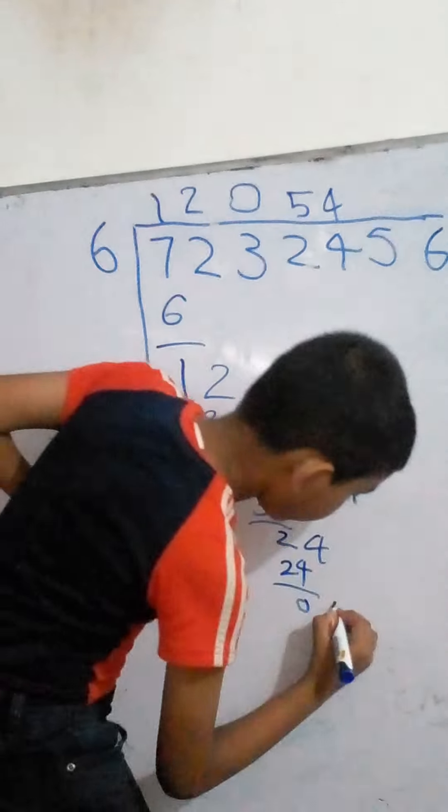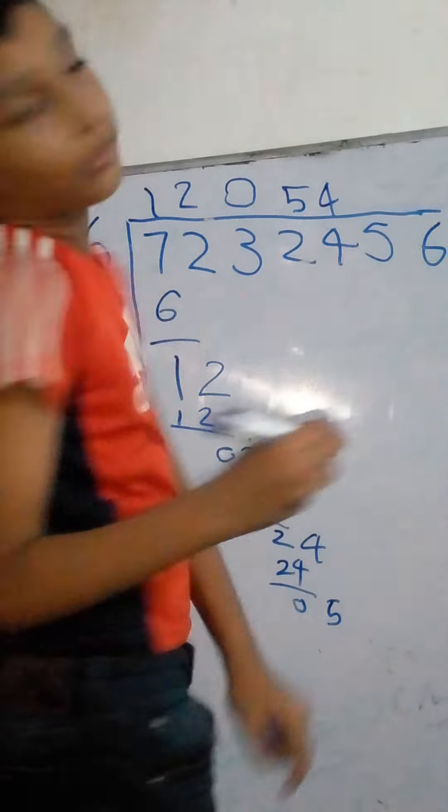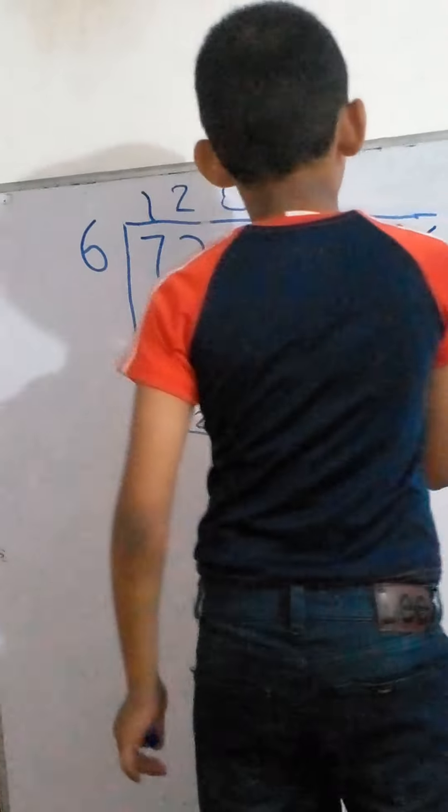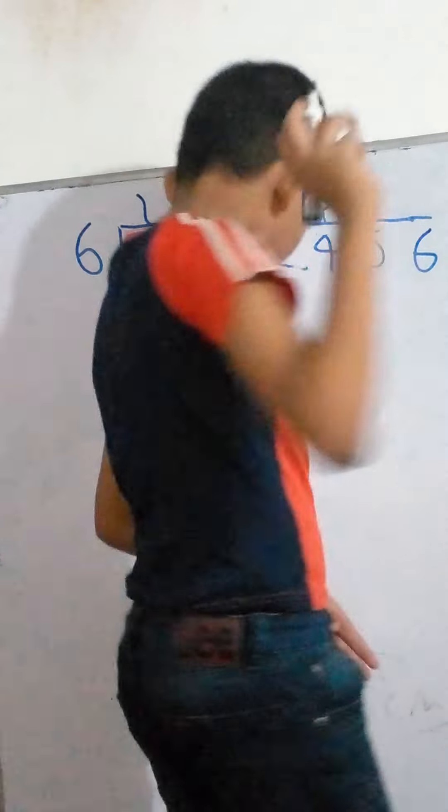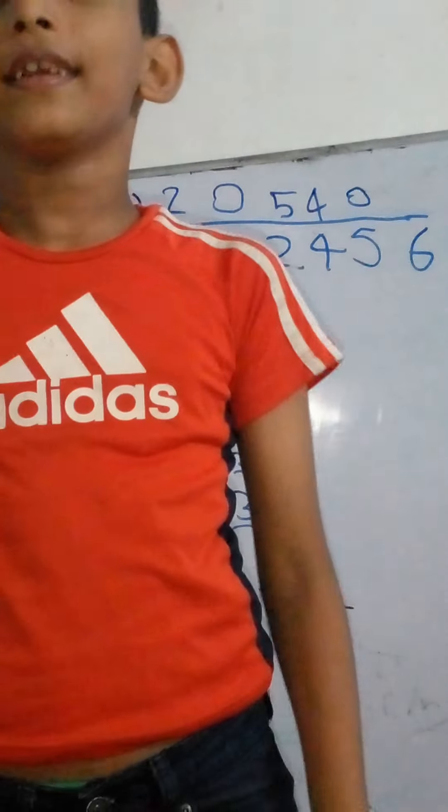Five is bigger. Five can't divide by six. That's why I need to put here zero. And I need to get these six here. Fifty-six, fifty-six.